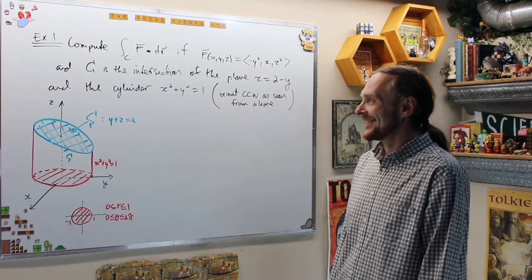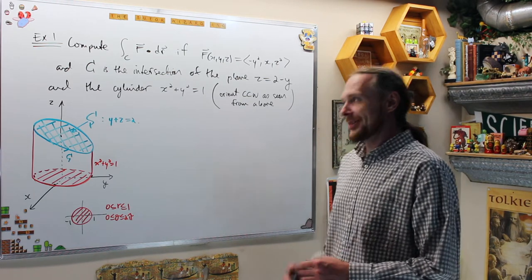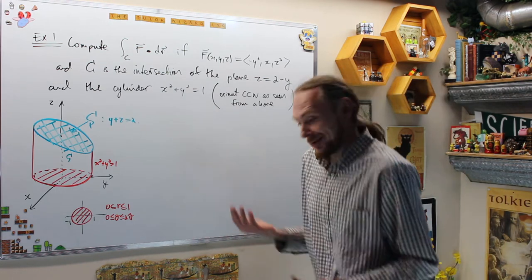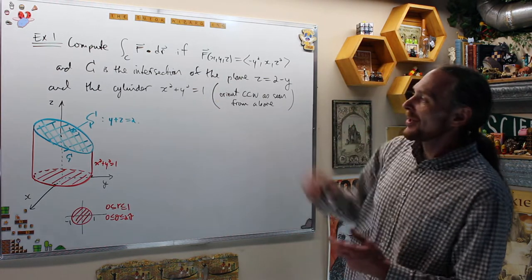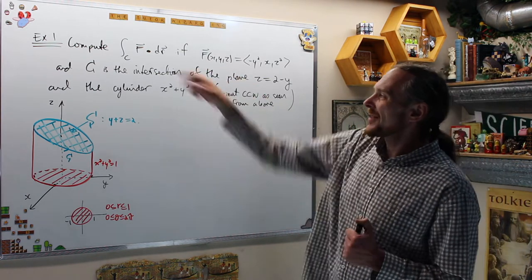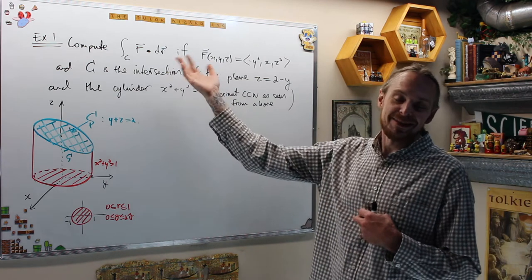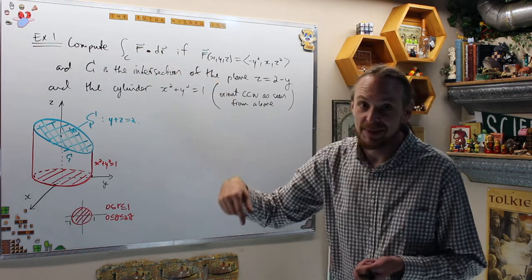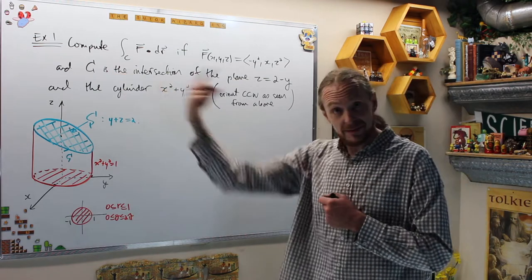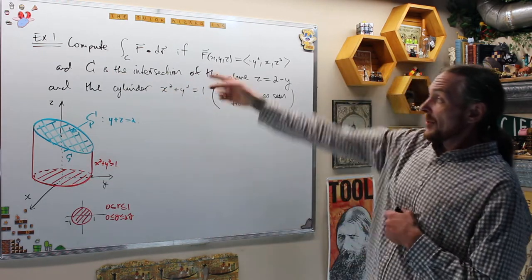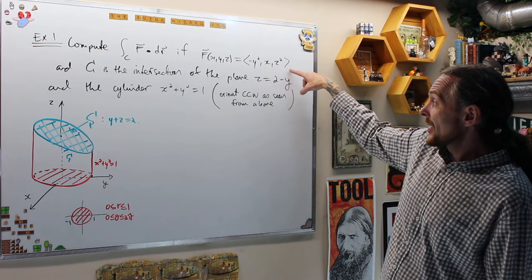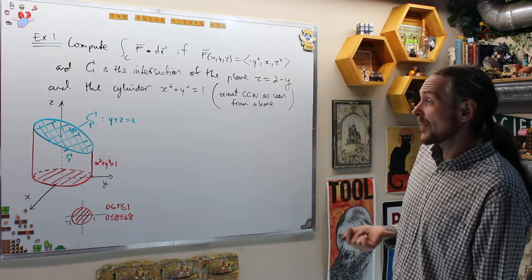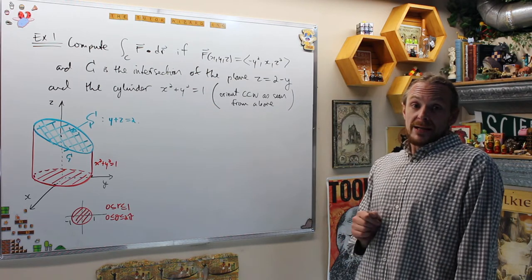Let's do an example. Compute the line integral of this vector field. I like the way they phrased this question — they're making you connect to Stokes Theorem, because computing that line integral by just parameterizing the curve directly would be much worse. So we're going to view this curve as the boundary of some surface. Compute this line integral where the vector field is (-y², x, z²), and C is the intersection of the plane z = 2 - y and the cylinder x² + y² = 1.